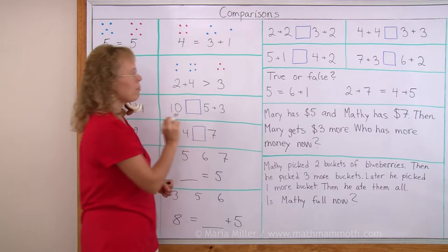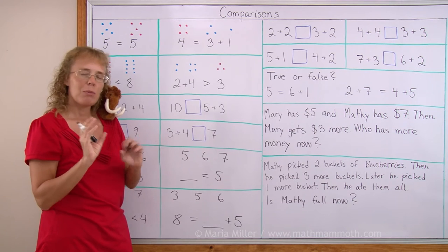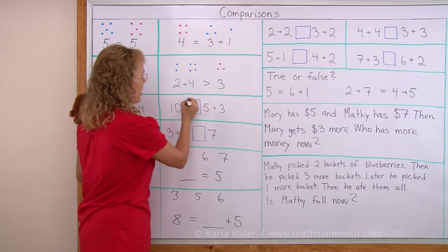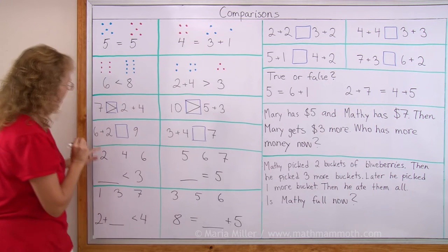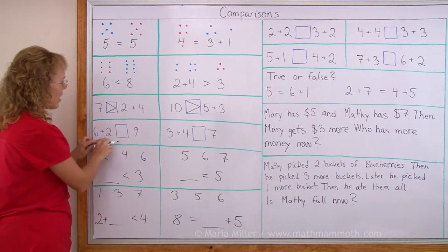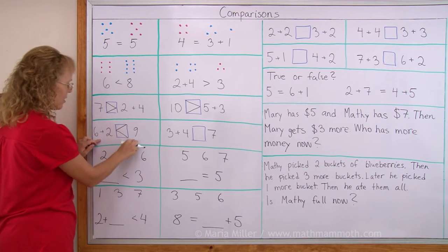Here's 10, and here's 5 plus 3. How much was 5 and 3? 5 and 3 makes 8. 10 is greater than 8. 6 plus 2. Well, that's 8, right? So 8 is less than 9.